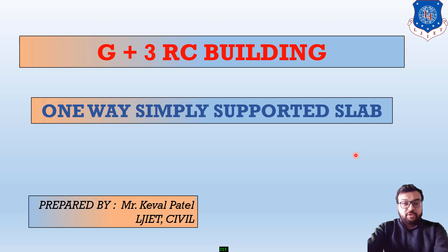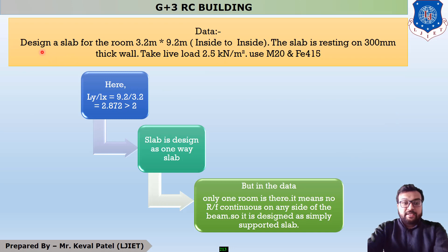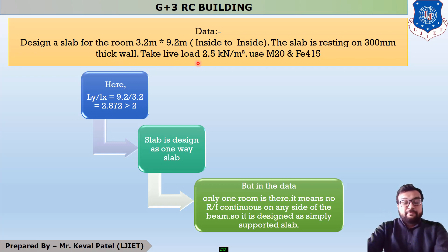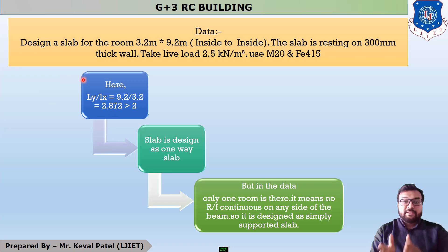In the question, the data given is: design a slab for a room with dimensions 3.2 m × 9.2 m, which is the inside-to-inside dimension. The slab rests on a 300 mm thick wall. Live load is 2.5 kN/m². Use M20 and FE415. Although it is already given as a one-way slab, we check further by computing LY/LX.